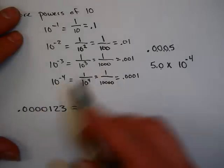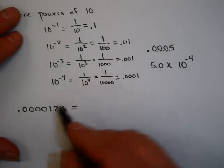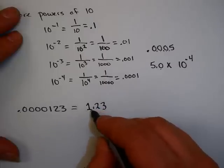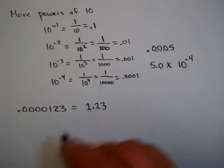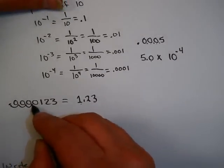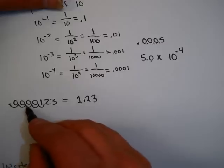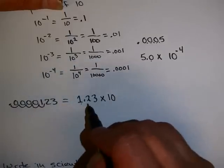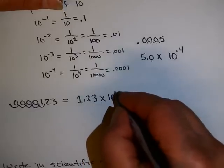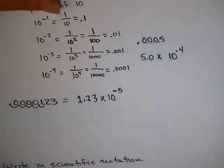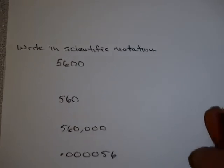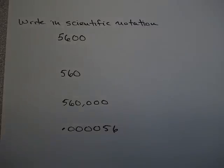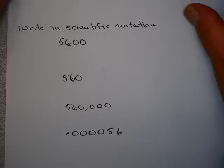Here, to write this number in scientific notation, I want to move the decimal point so that it reads 1.23. Remember, I need a number between 1 and 10 — one non-zero digit in front of the decimal point. To do that, I'm going to move the decimal point 1, 2, 3, 4, 5 places. This original number is quite a bit smaller than 1.23, so I'm going to multiply by a negative exponent — 10 to the negative 5. Now take a moment and try writing these problems in scientific notation yourself, then we'll come back and talk about them. Pause the video now.